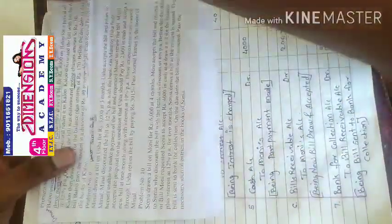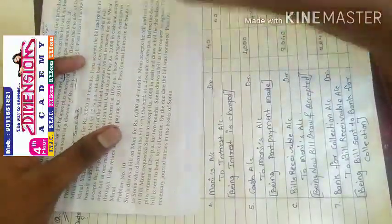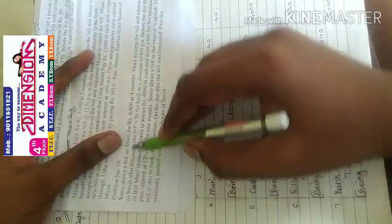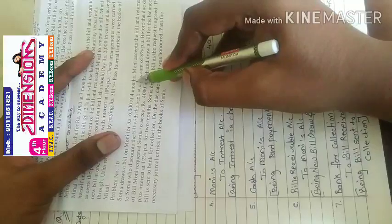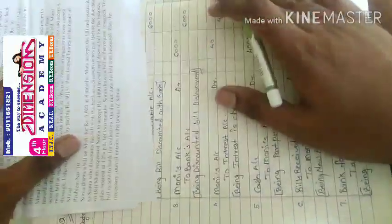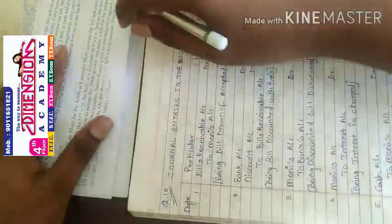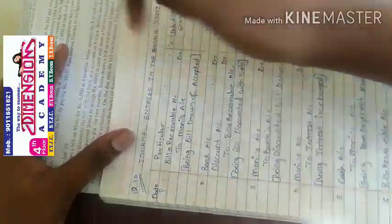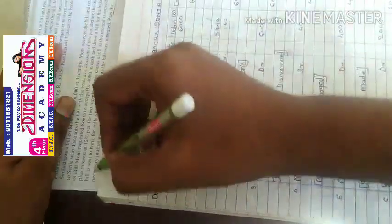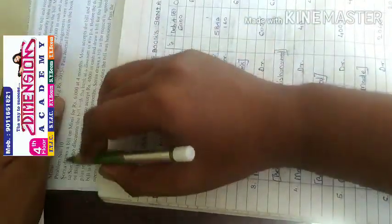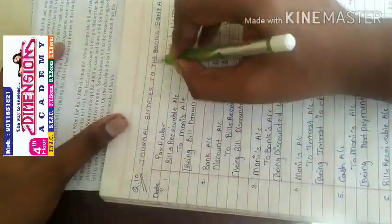Hello friends, today we are going to study question number 10 from sheet number 2. In question number 10, Sonia drew a bill on Money for Rs. 6,000 at 4 months. This means goods sold entry, which entry is going to be directly bills receivable, bills accept and bills drawn. So first entry in the general entry in the books of Sonia.